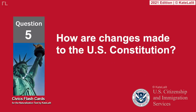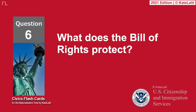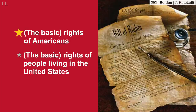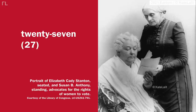How are changes made to the U.S. Constitution? Amendments. The amendment process. What does the Bill of Rights protect? The basic rights of Americans. The basic rights of people living in the United States. How many amendments does the U.S. Constitution have? Twenty-seven.